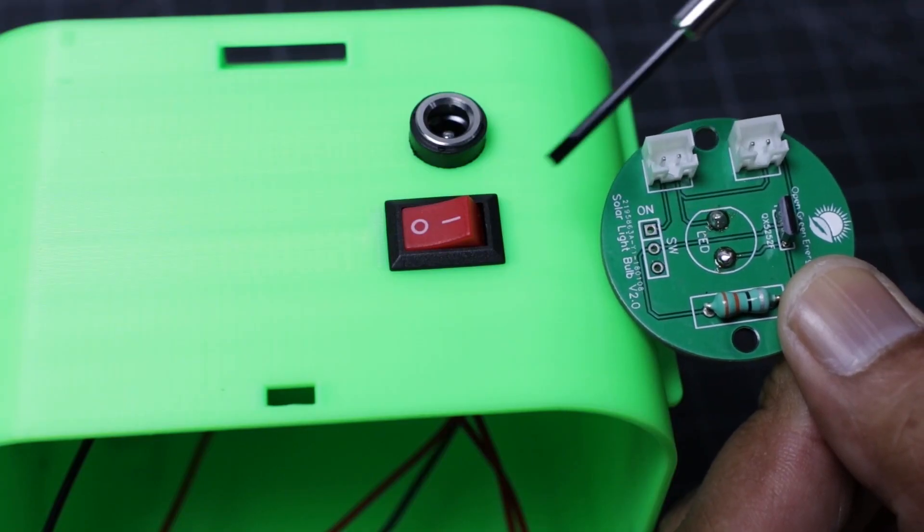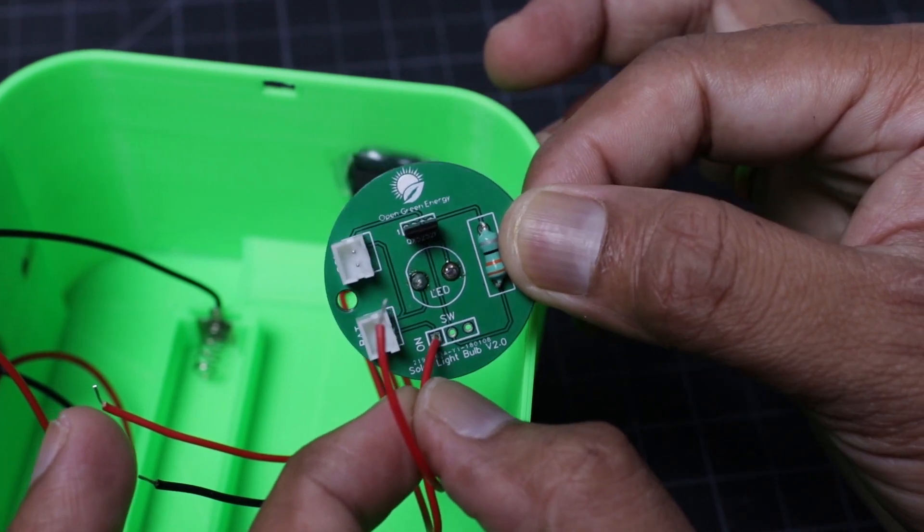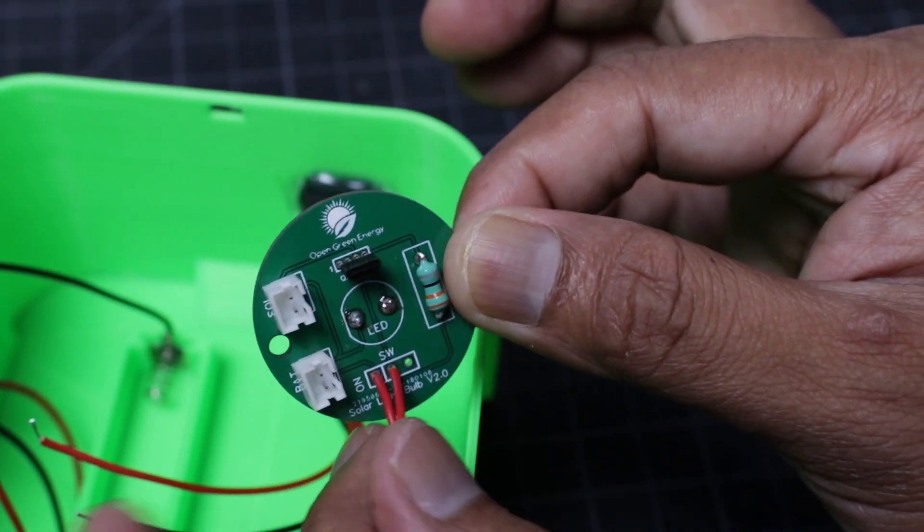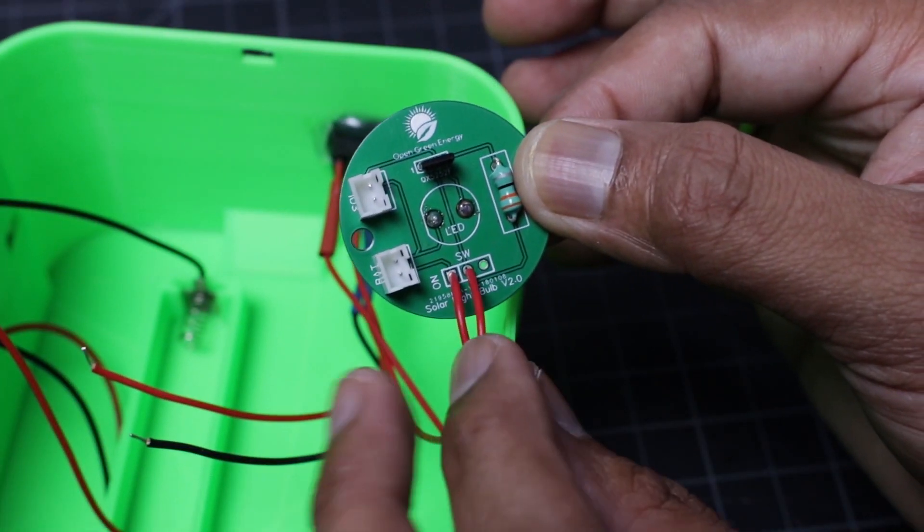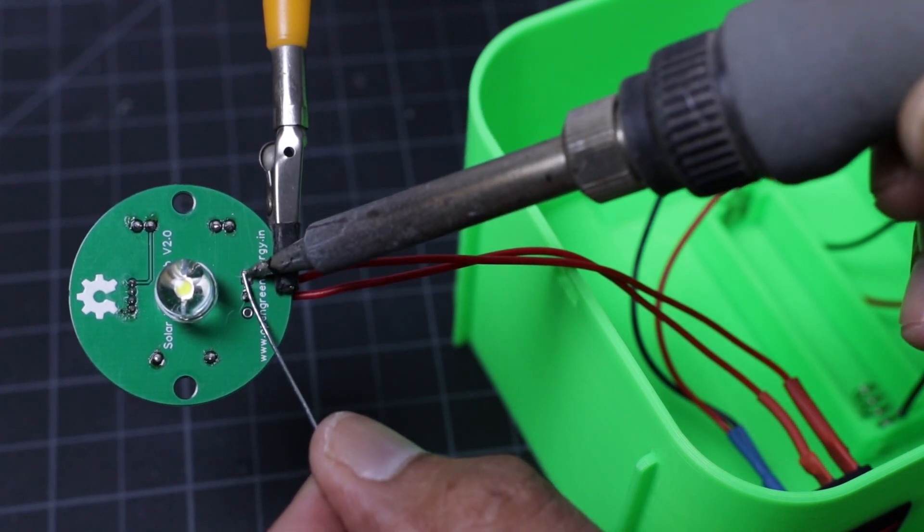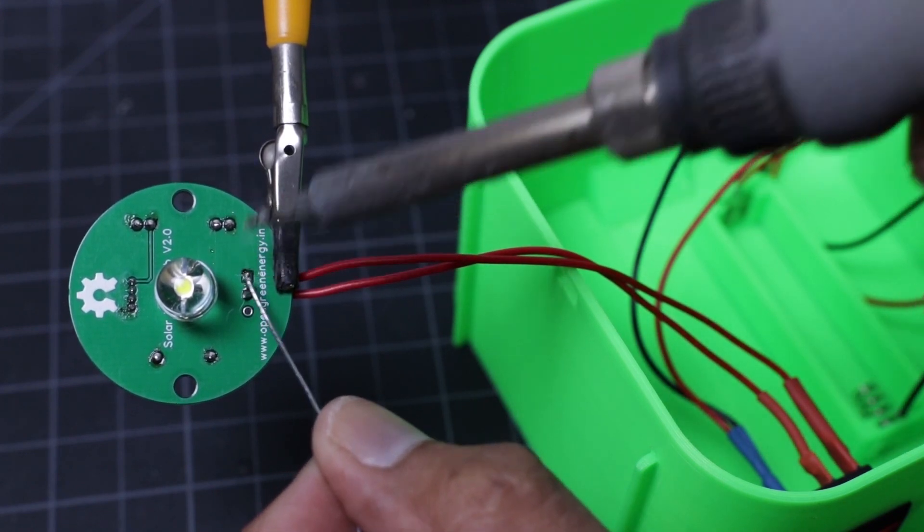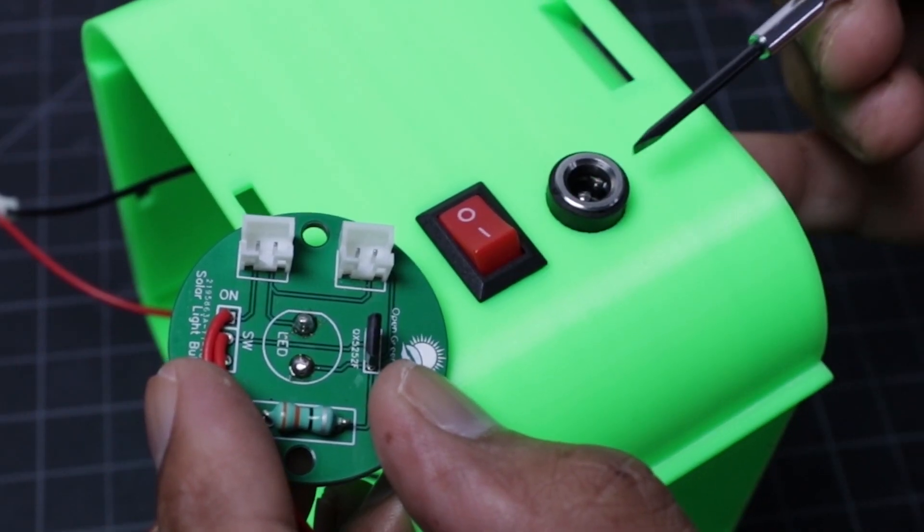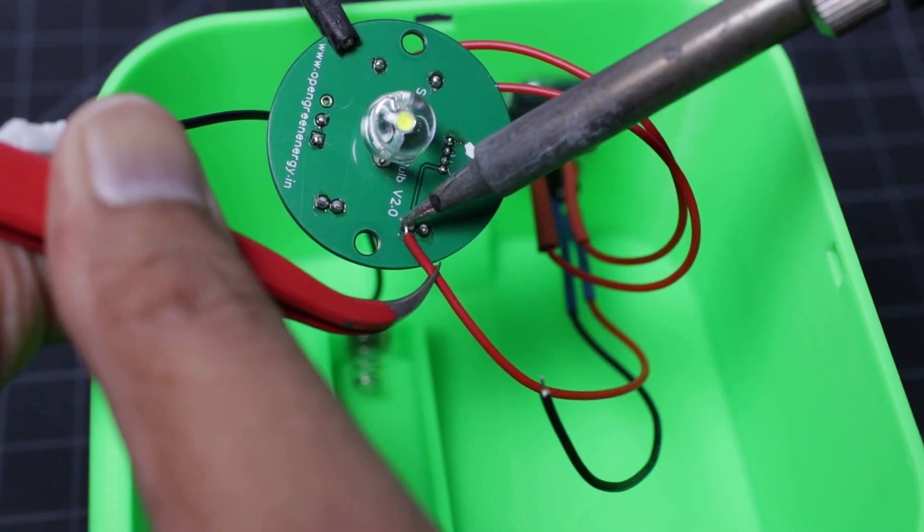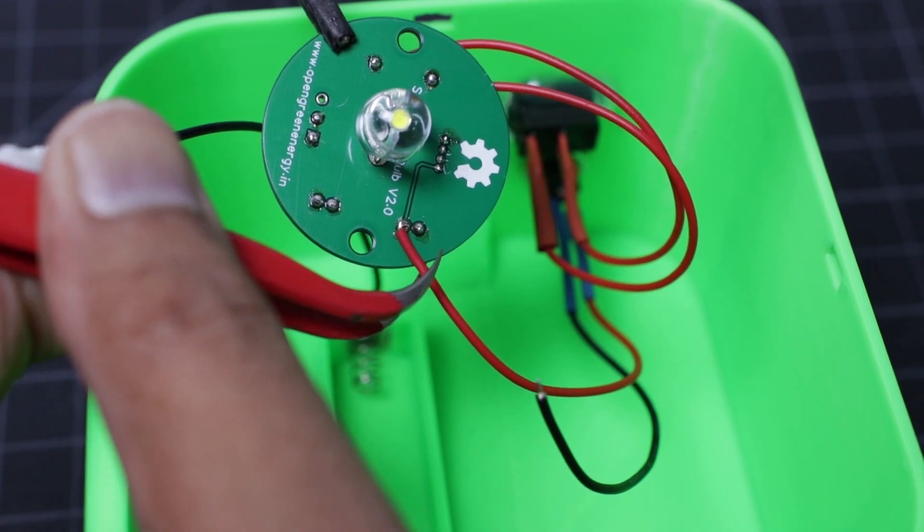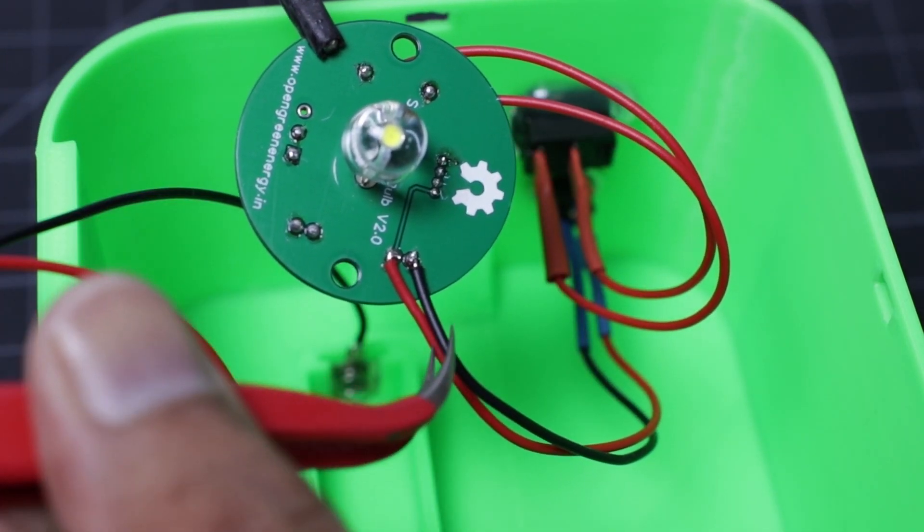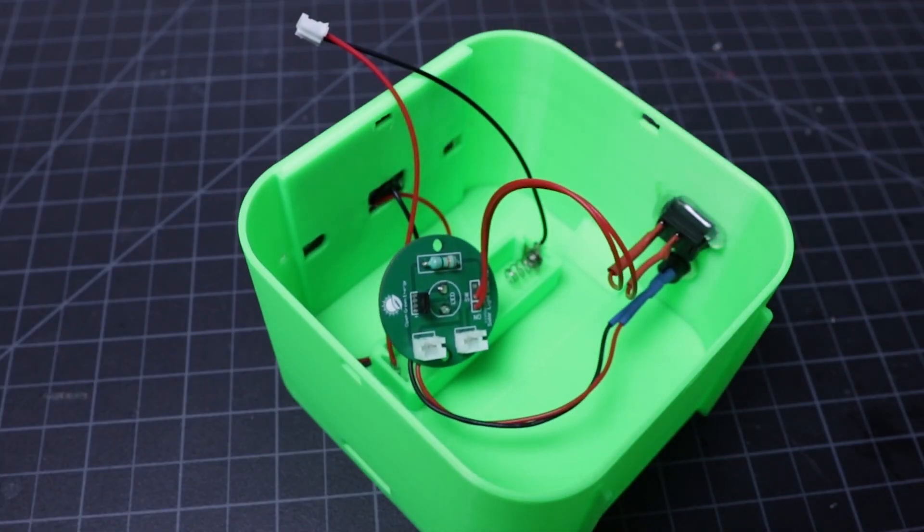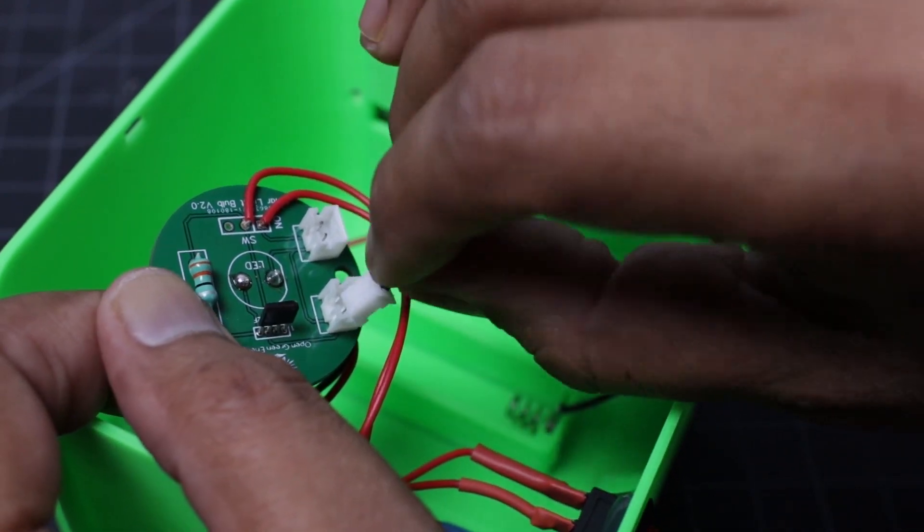Now I am going to solder the rocker switch terminal wires to the PCB board. At last you have to solder the two terminal wires from the DC jack to the PCB board. Connect the solar panel and battery JST connector to the PCB board.